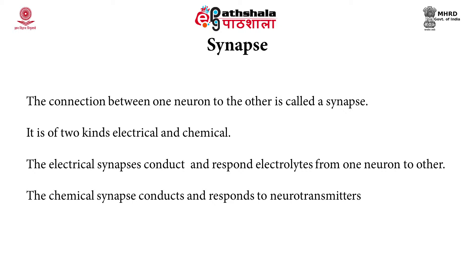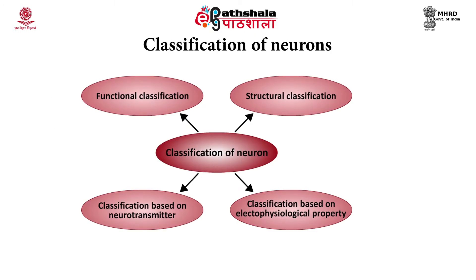Synapses are connections between one neuron and another and they could be electrical or chemical in nature. Neurons can be classified in different ways: based on their structure, based on their function, based on the type of neurotransmitters they release, or based on the electrophysiological function of the cell.